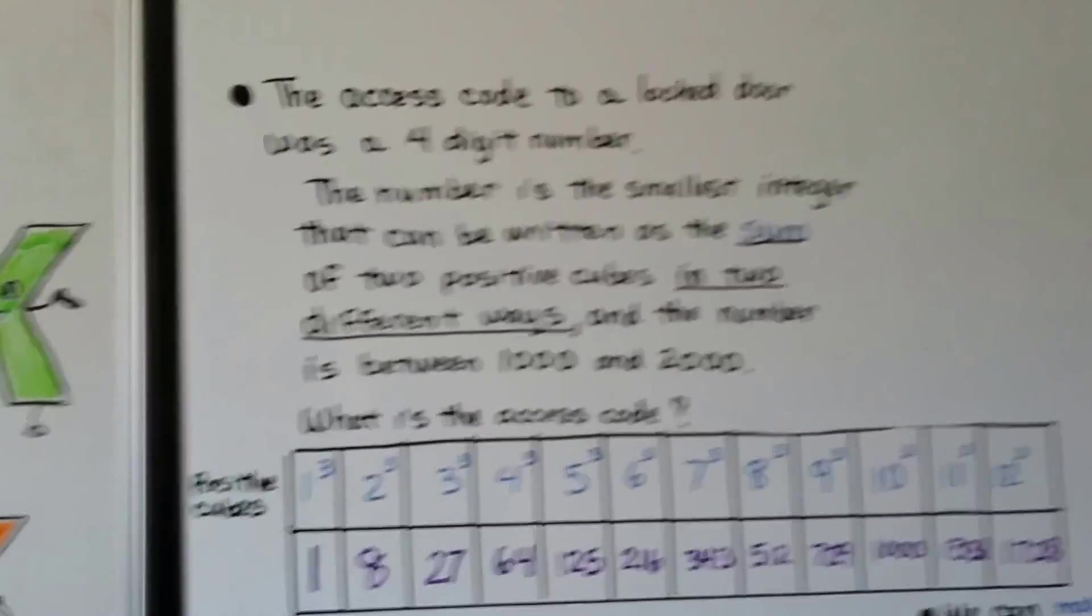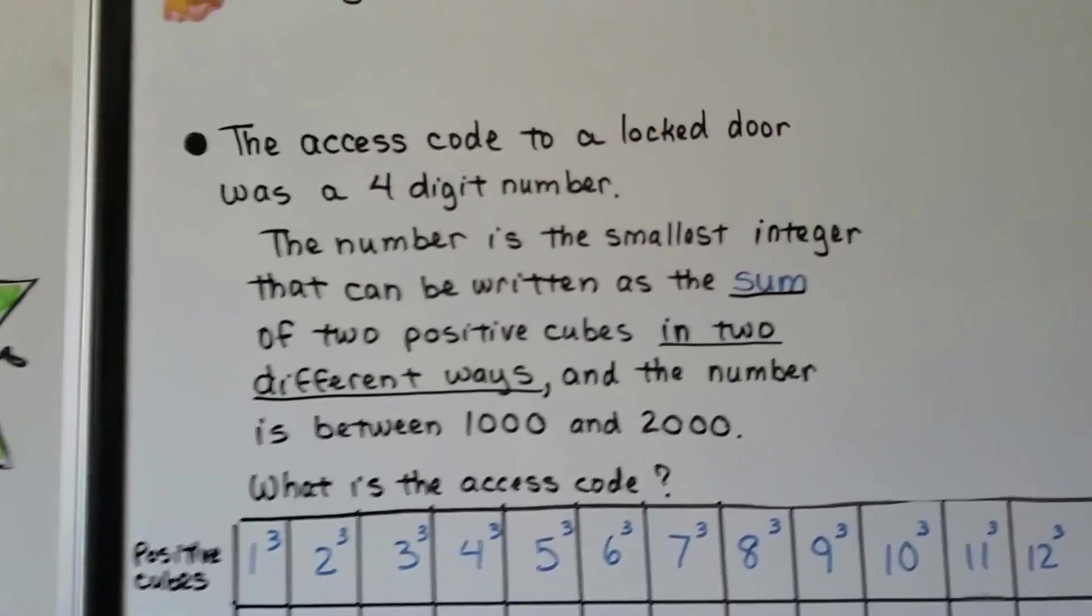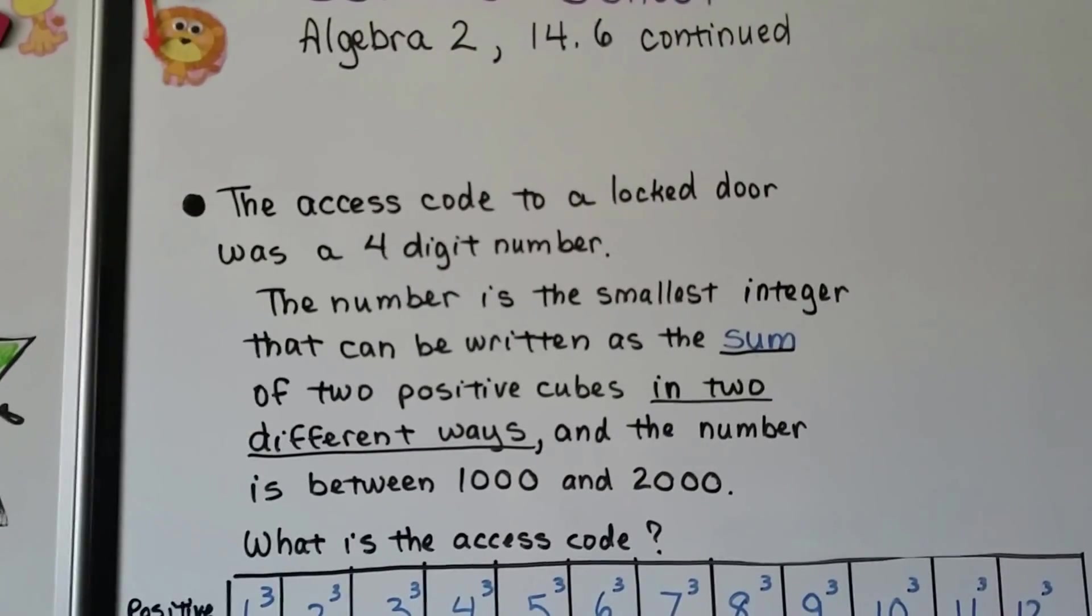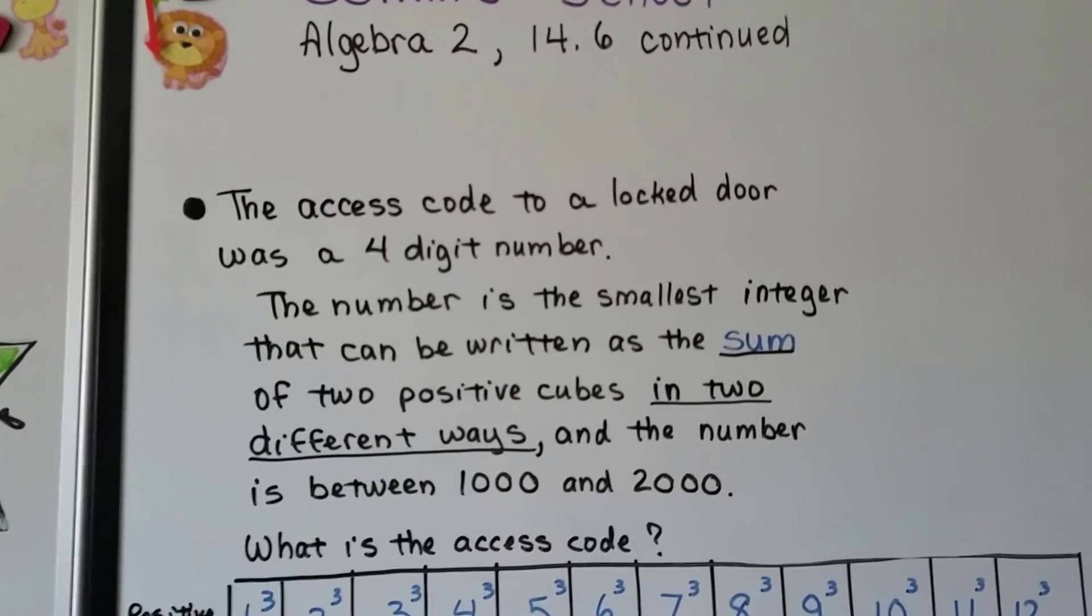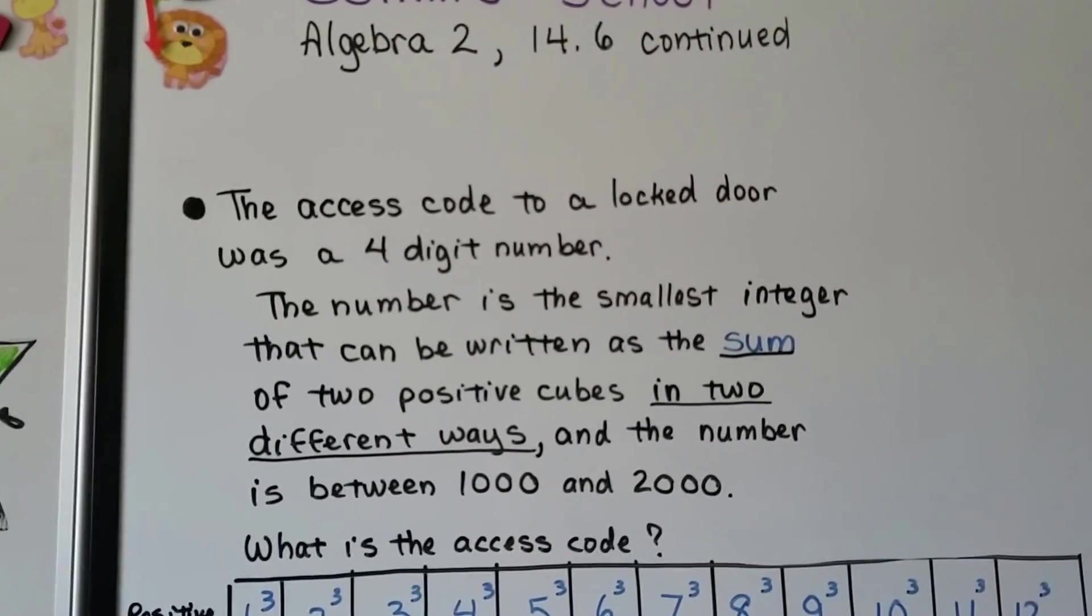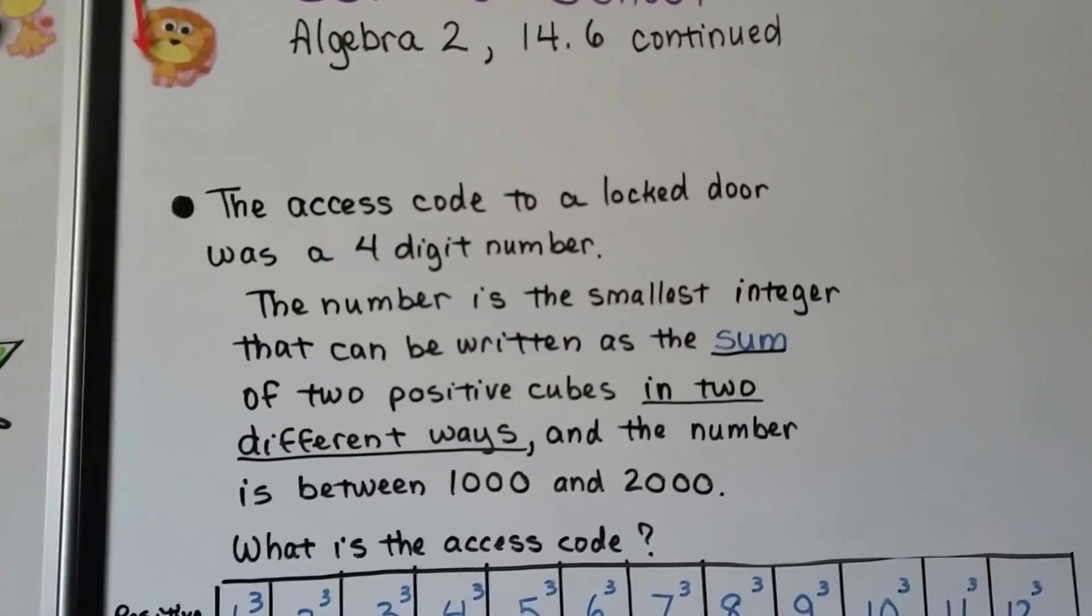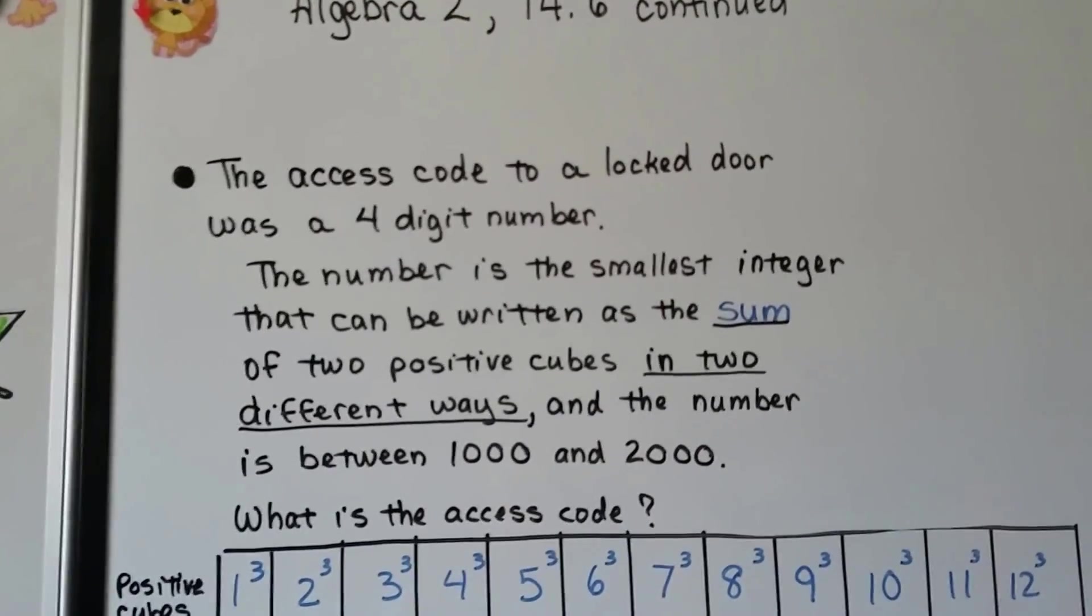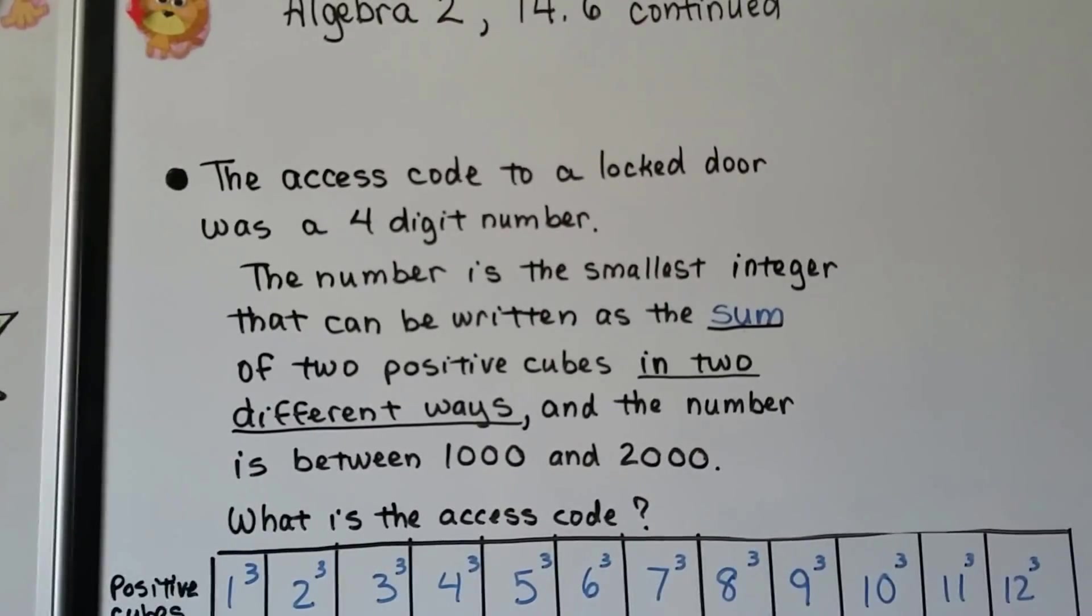Now here's one. It's a little bit famous. I've changed the wording. The access code to a locked door was a four-digit number. So this could be a pin number, any four-digit number. The number is the smallest integer that can be written as the sum of two positive cubes in two different ways, and the number is between 1,000 and 2,000. What is the access code?